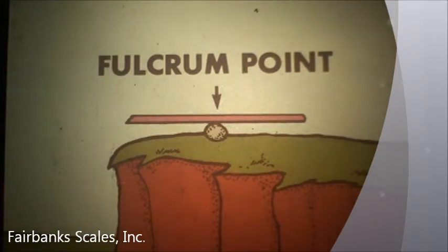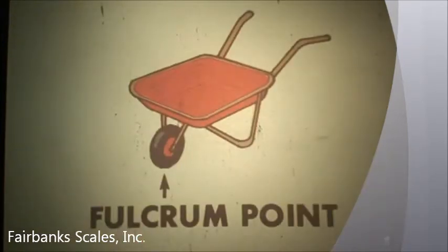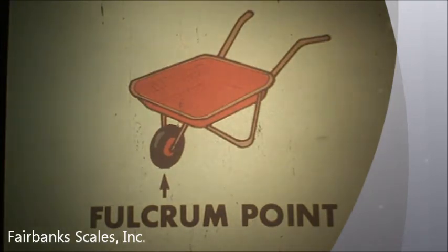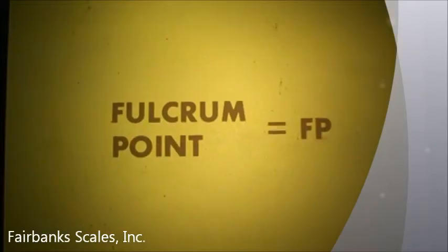The fulcrum point is the point which supports the lever. Here, the fulcrum point is the log, which supports the crowbar. Here, the fulcrum point is the wheel, which supports the wheelbarrow. And here, the fulcrum point rests on a stand and supports the scale lever. Fulcrum point is abbreviated FP.